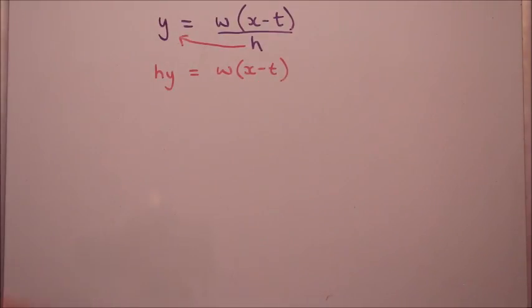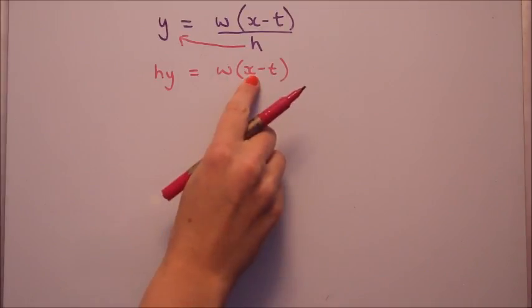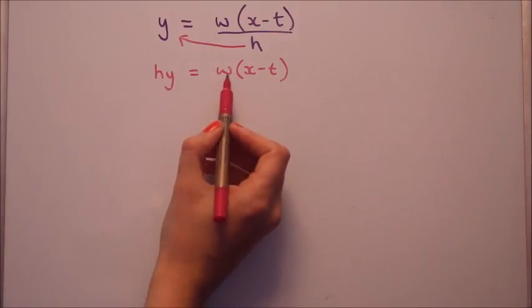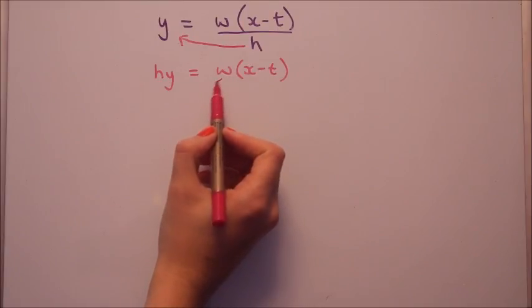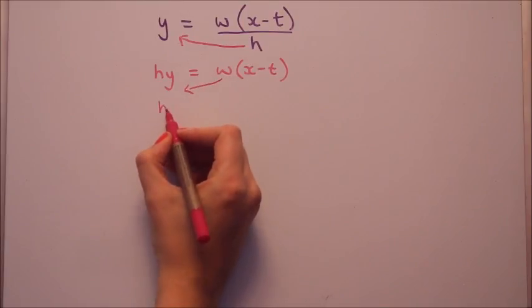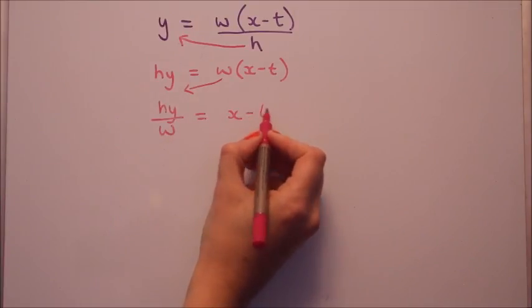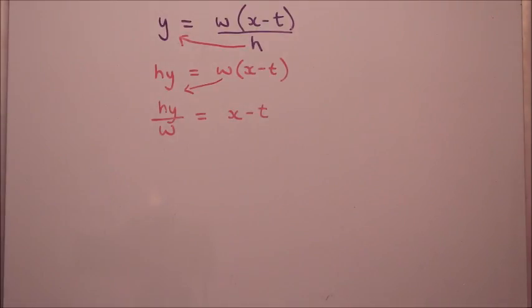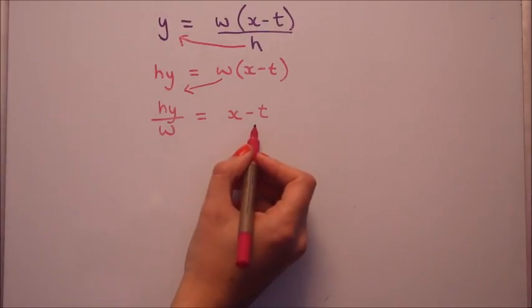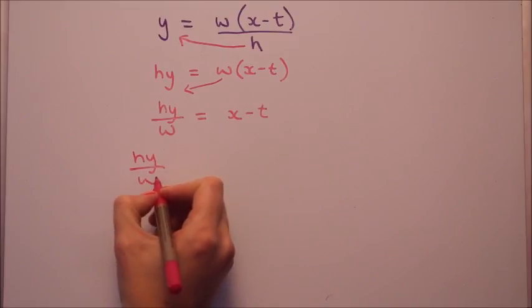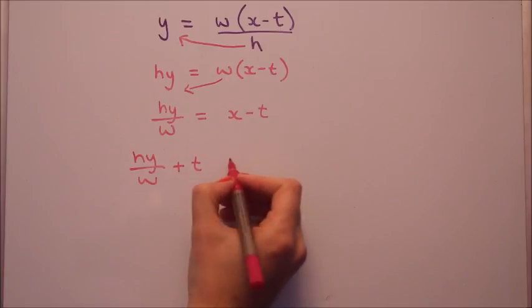Next thing I'm going to do is get rid of the W. I'm trying to get X on its own, so it's like unpicking the outer layers, like unpicking an onion or something. So I'm going to get rid of this W. Because we're multiplying by W, I'm going to do the opposite, that's divide by it, so that's going to go down. So HY divided by W, left with X minus T on that side, and now we're just one step away from getting X on its own, getting rid of this minus T, opposite is add, plus T equals X.